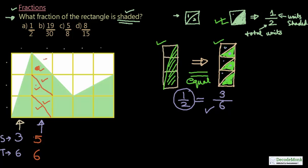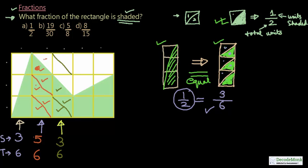Coming to the third column, again considering each square as consisting of triangular units: there are 6 units in this column and out of those, 3 portions are shaded — 1, 2, and 3.